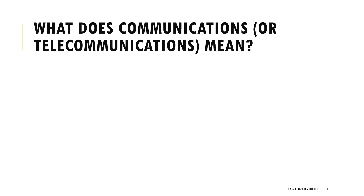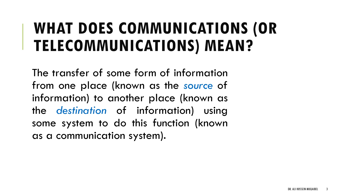So what does communication or telecommunication mean? We can think of communication as the transfer of some form of information from one place — which we call the source (the blue colors indicate new terminology) — to the destination, another place. So information being transferred from one location to another is called communication, and the system used to do that is known as the communication system.